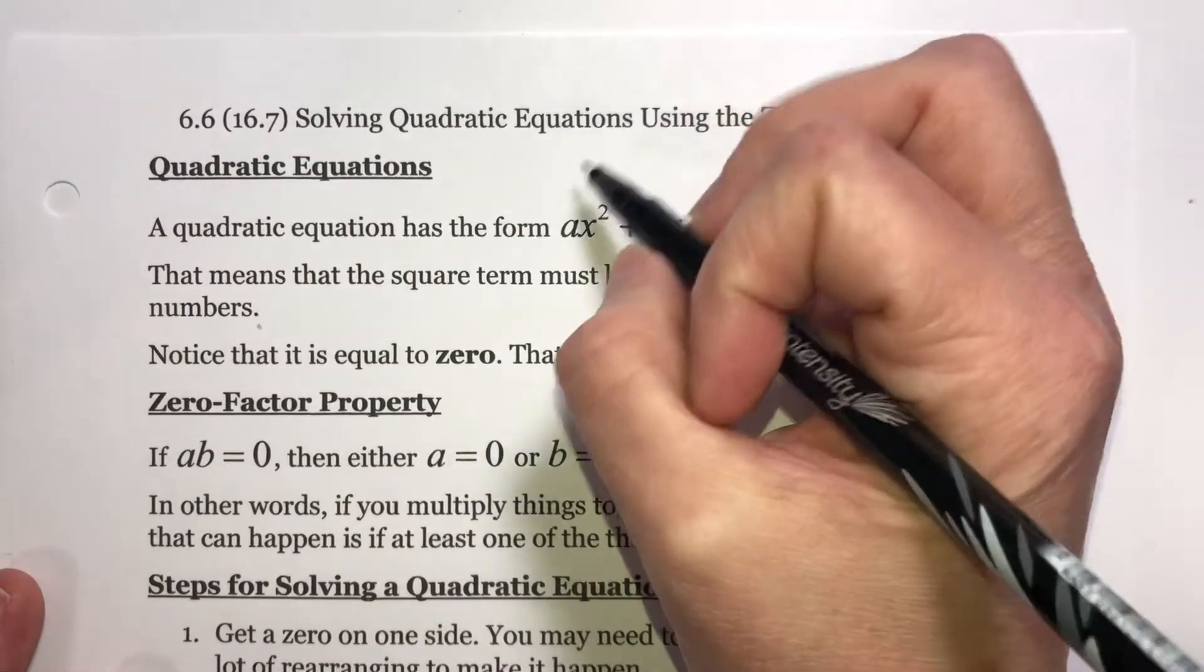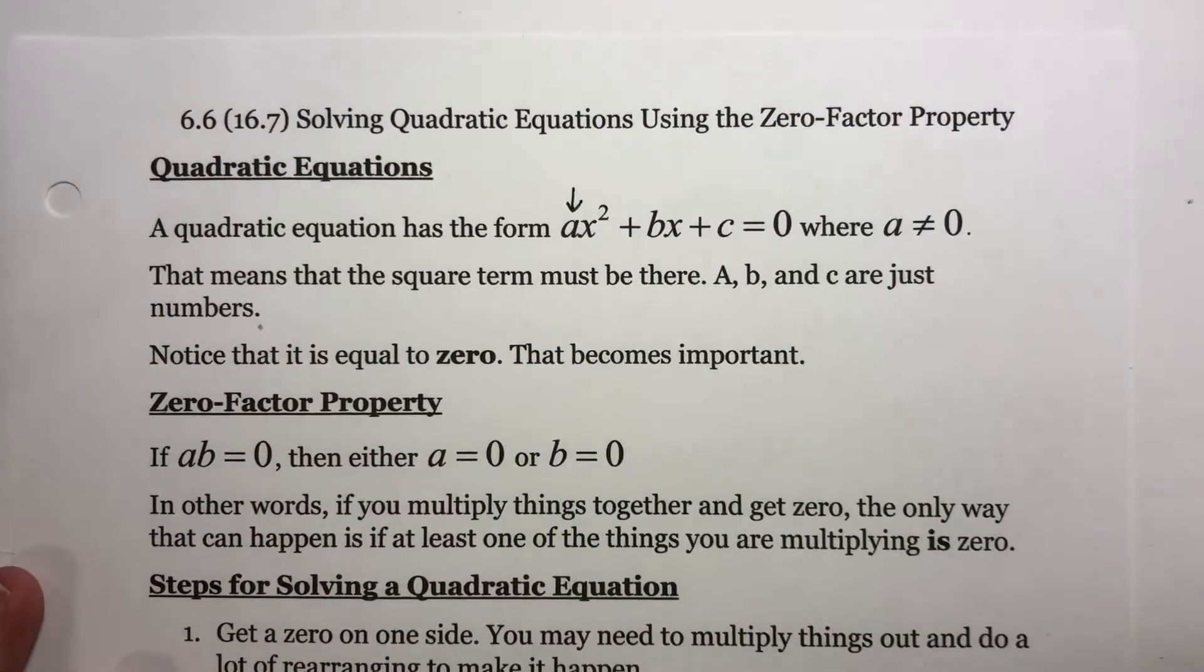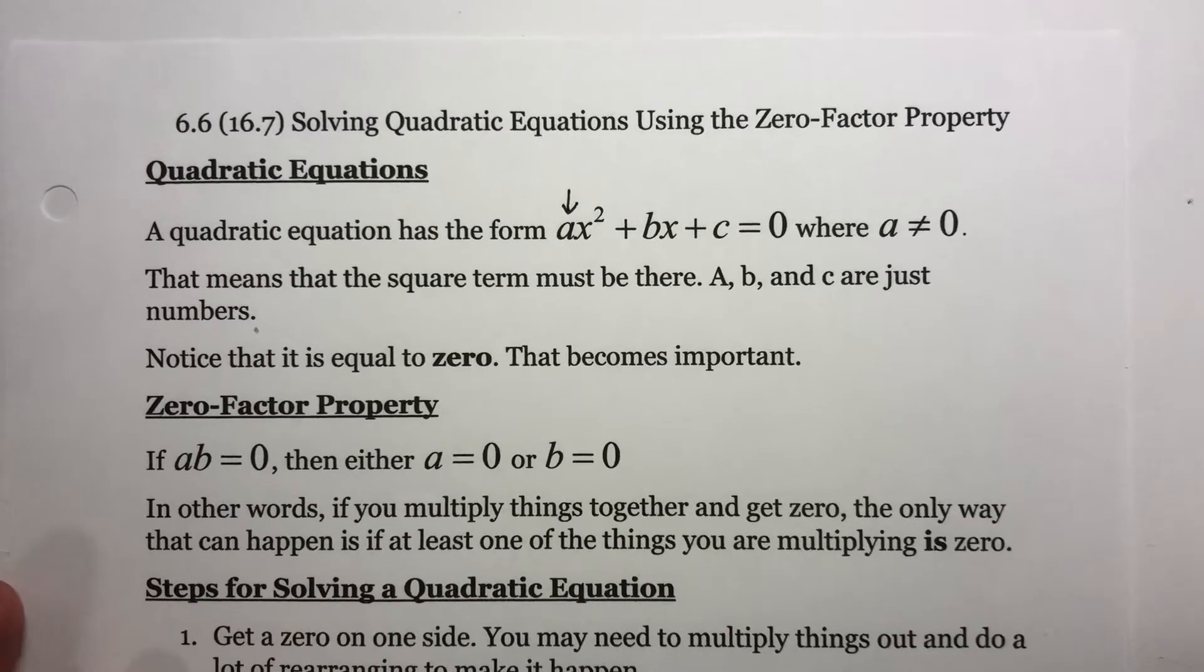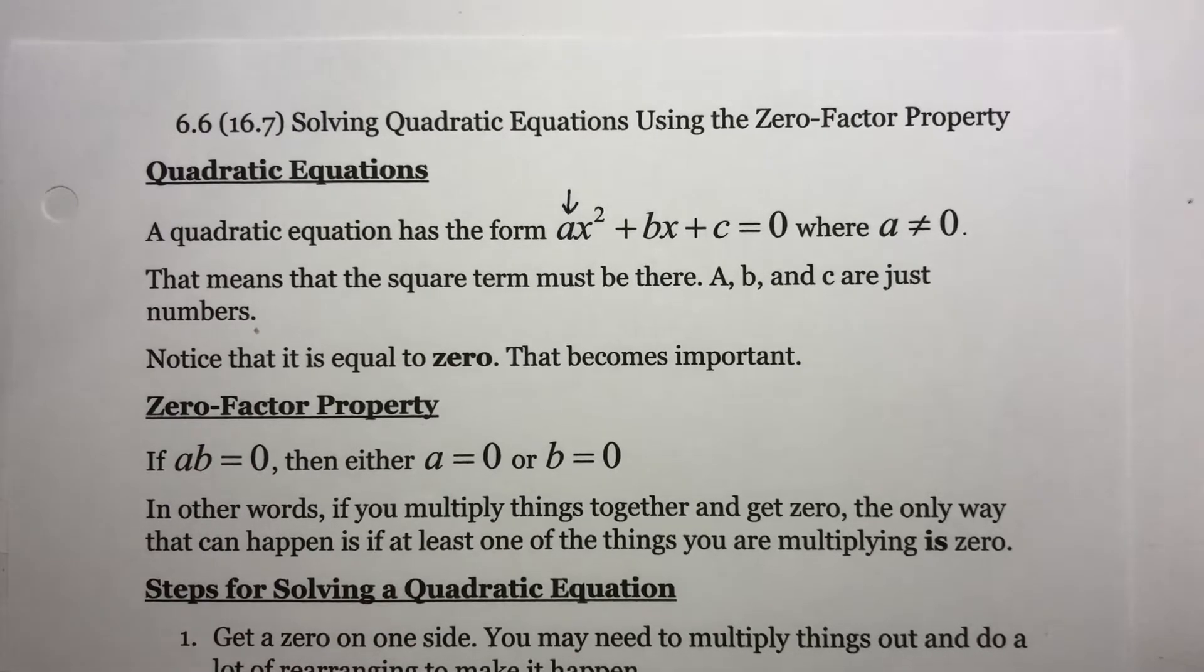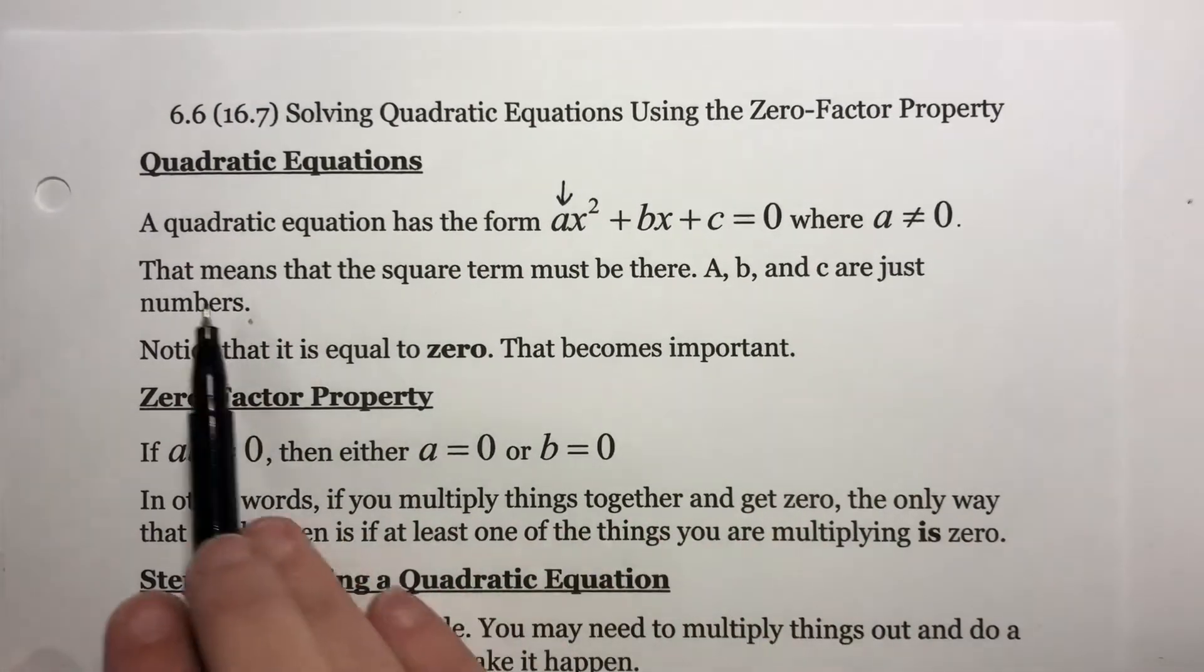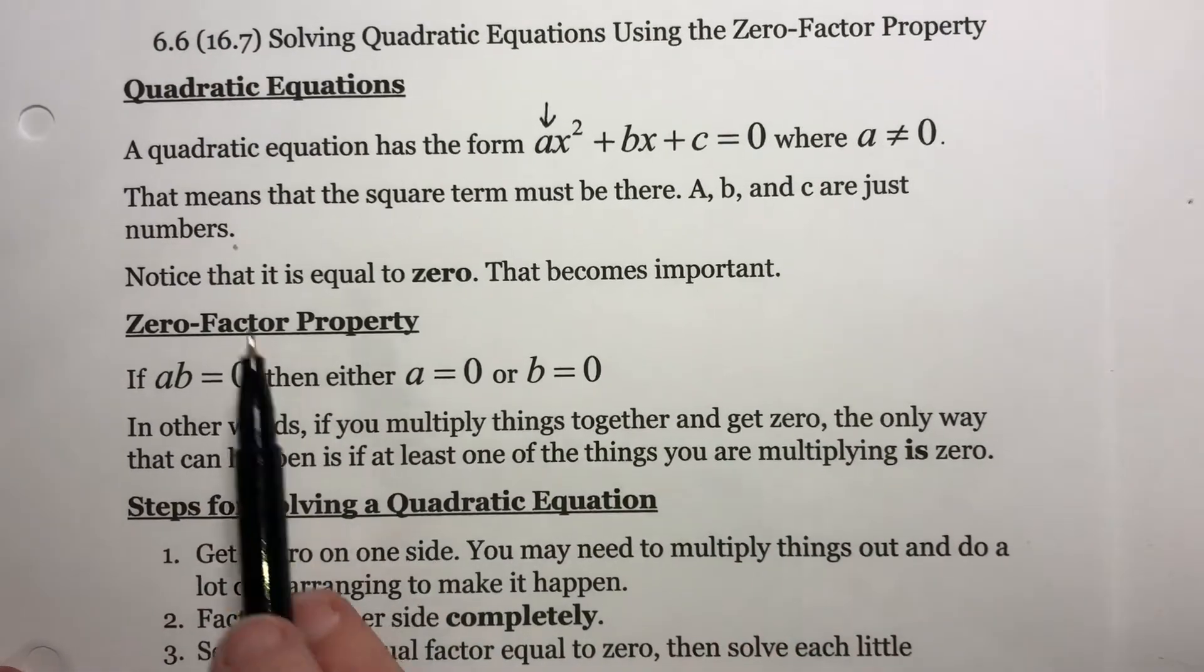Most of the problems we're going to be working, we're not going to have a number in front of our x squared. The only time we know how to work one of those is if we have a GCF or if we have one of our special forms, like a difference of squares or a perfect square trinomial. A, B, and C are just numbers.